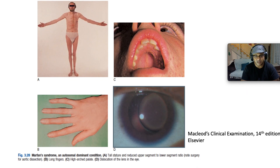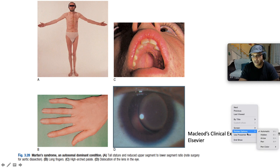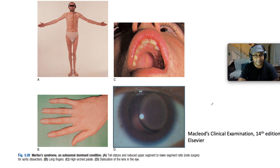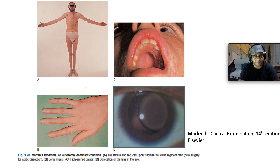Here is a diagram from McLeod's illustrating some of the features of Marfan syndrome. This gentleman is quite tall and has a reduced upper segment to lower segment ratio, and his arm span is greater than his actual height. He also has a midline scar, probably because he had an aortic dissection before. Picture B shows the long fingers — arachnodactyly. C shows the very high arched palate, and D speaks to dislocation of the lens.